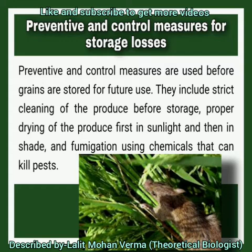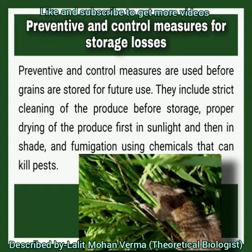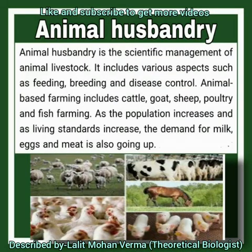So how can we prevent and control the storage losses? Preventive and control measures are used before grains are stored for future use. They include strict cleaning of the produce before storage, proper drying of the produce first in sunlight and then in shade, and fumigation using chemicals that can kill pests. Fumigation means those pesticides which can destroy insects while forming toxic fumes are called fumigants, and the process is called fumigation.